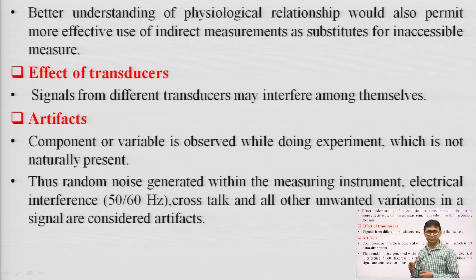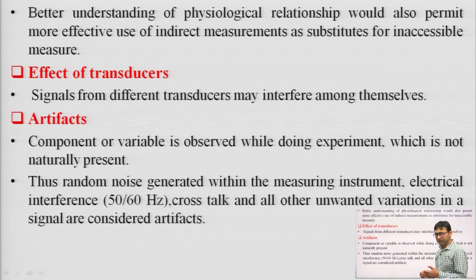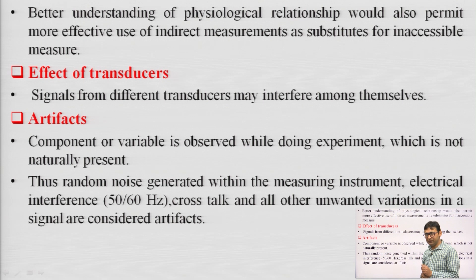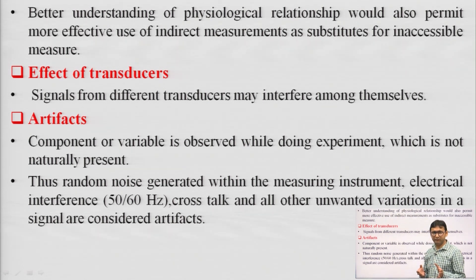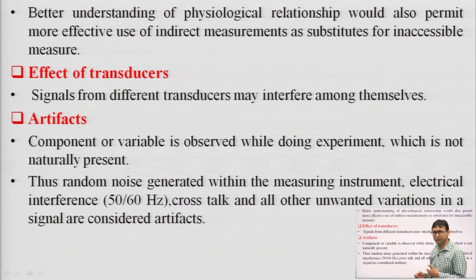It is very difficult to place the transducer and we do not always know where to place it to get the data precisely. This is one of the great difficulties — to access the biological parameter within the human body. Sometimes we do not know whether to take the measurement directly or indirectly from the body.